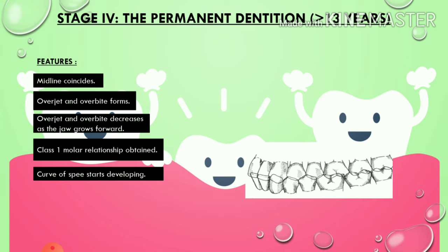Lastly, Stage 4 — the permanent dentition. Its features are: the maxillary and mandibular midlines coincide; overjet and overbite form, though if there is excessive forward jaw growth they decrease; a Class 1 molar relationship is obtained; and the curve of Spee starts developing. These are the four main features observed in the permanent dentition.